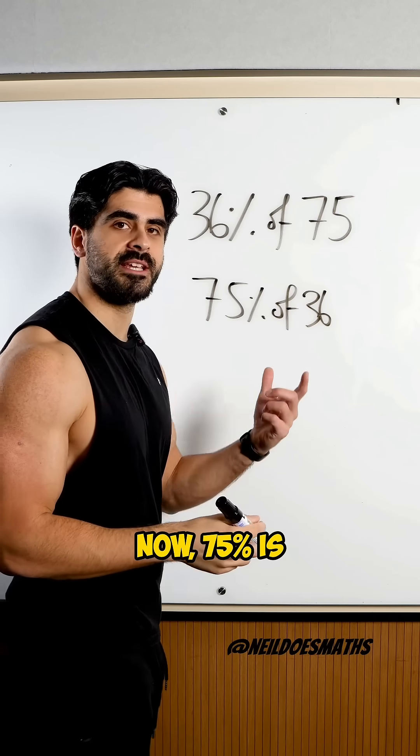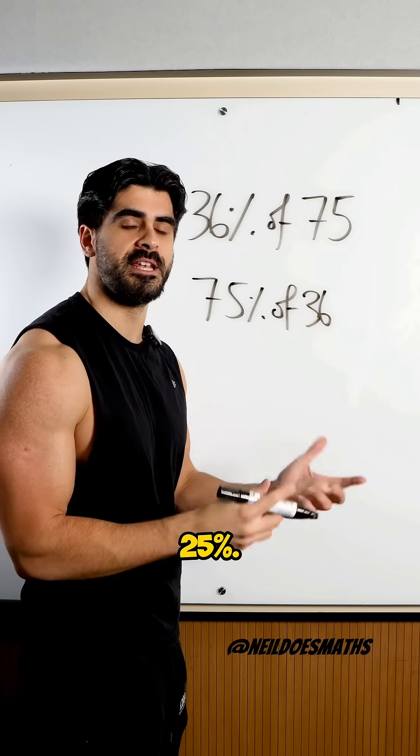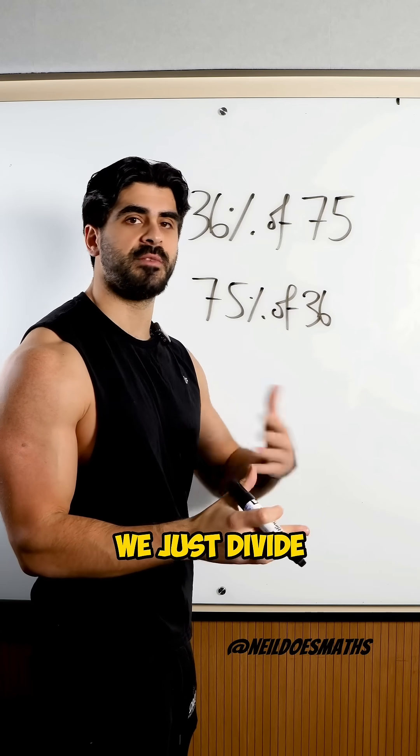Now, 75% is 3 lots of 25%. To find 25% of a value, we just divide by 4.